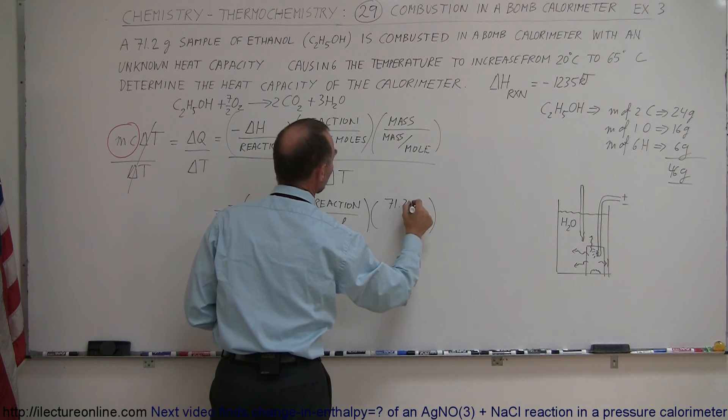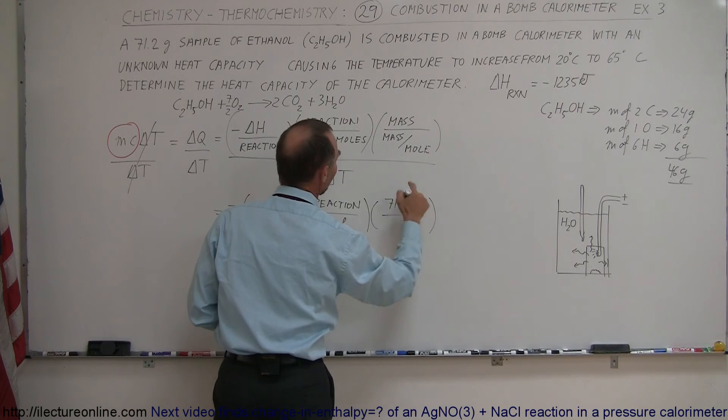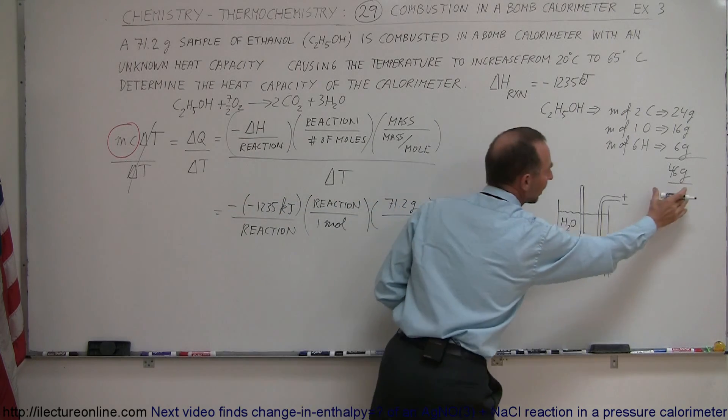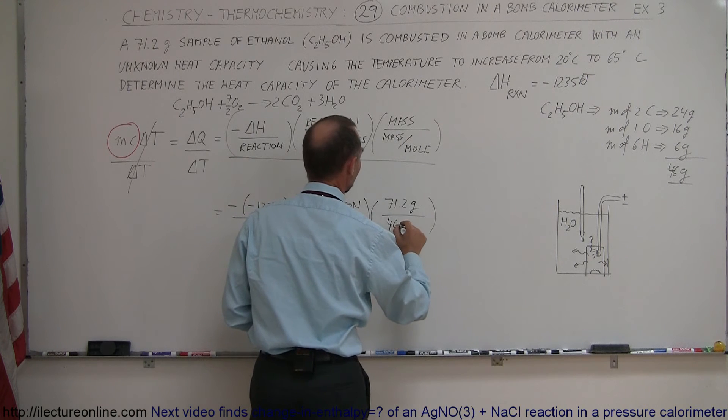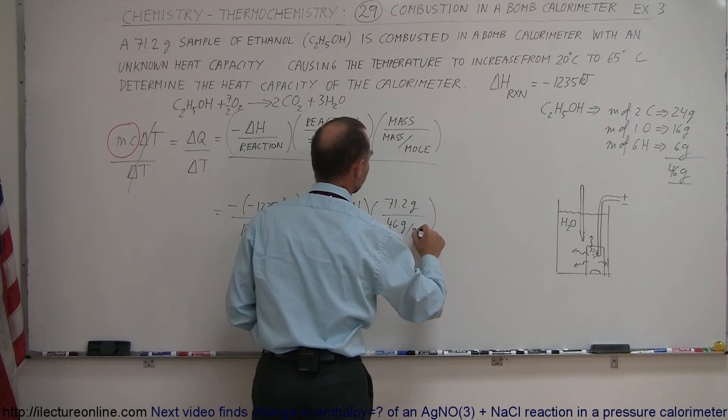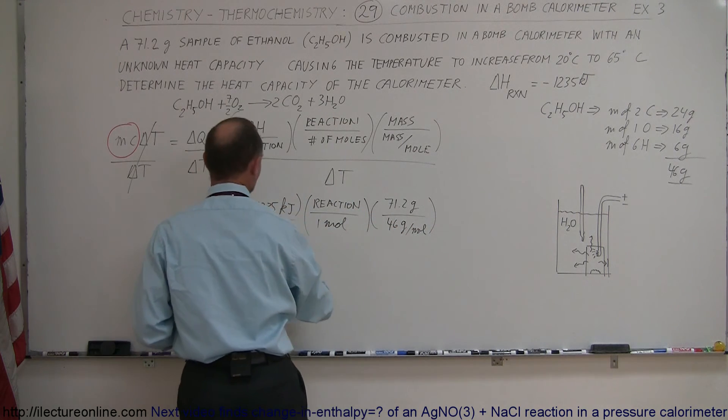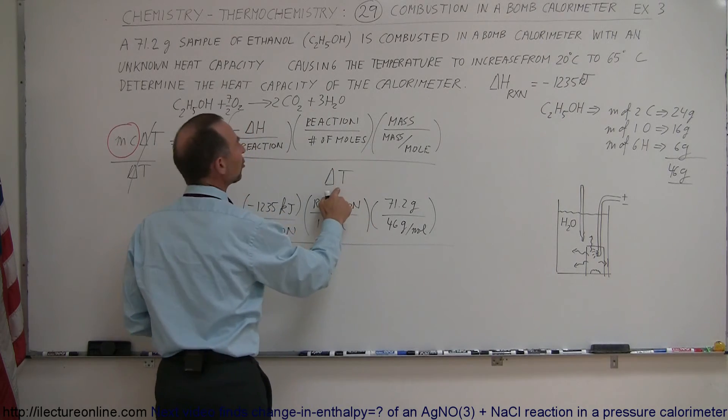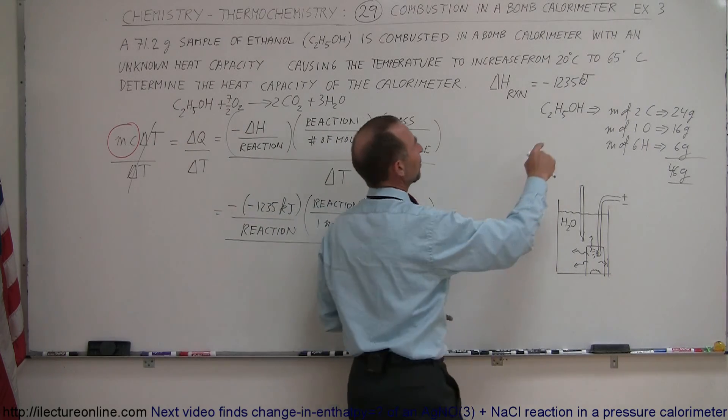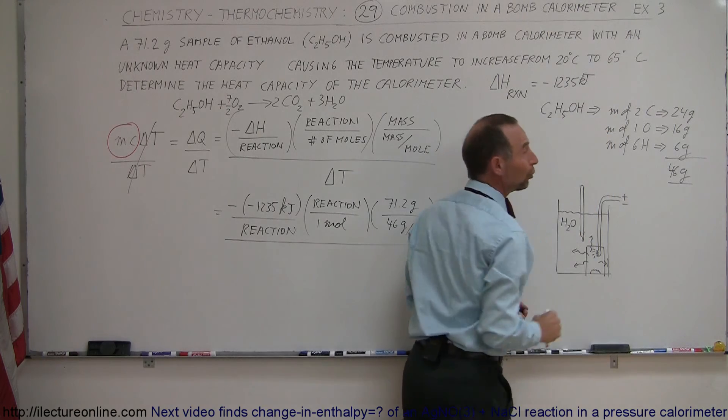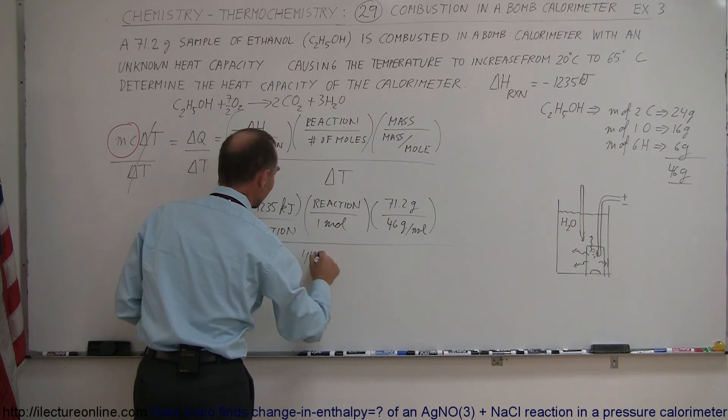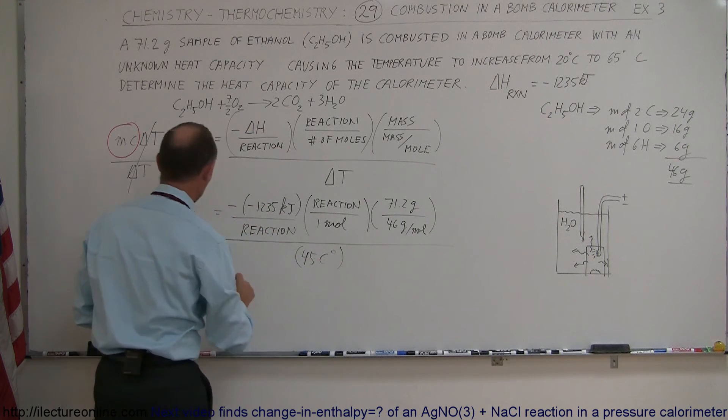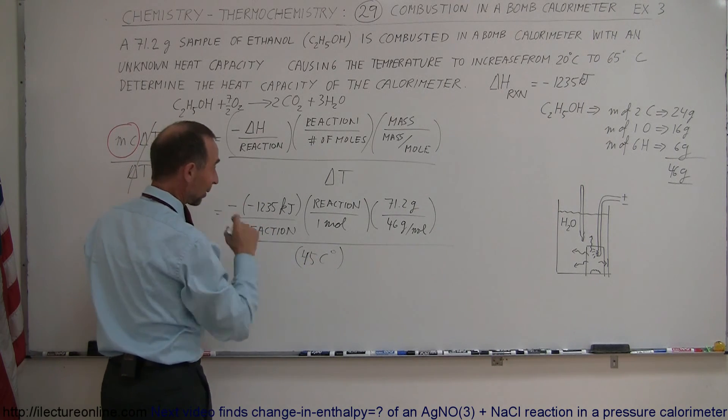We have a 71.2 gram sample. And now we divide by the molar mass, conveniently I pre-calculated there to be 46 grams per mole. And then we have to divide the whole thing by the change in the temperature. Notice that the calorimeter went from 20 degrees centigrade to 65 degrees centigrade, which means the delta is 45 centigrade degrees. And now we're ready.